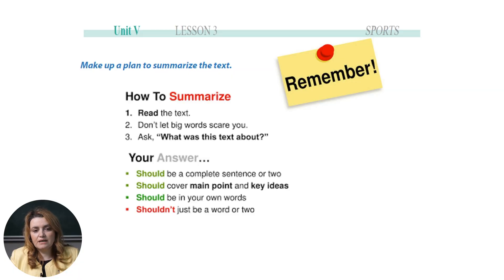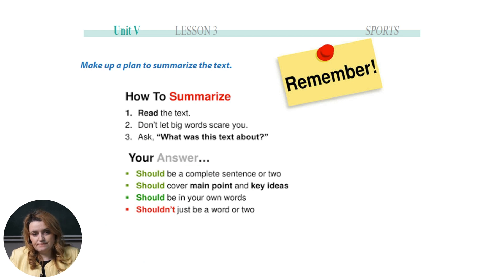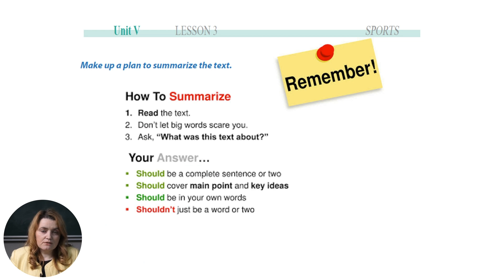What I want you to take away from this video is some tips on how to write a summary, because the task asks you to make a plan to summarize the text we just read. How to summarize: point one — read the text, and don't let big words scare you. Ask what the text was about. Your answer should be a complete sentence or two, should cover the main point and key ideas, should be in your own words — paraphrase — and shouldn't just be a word or two.